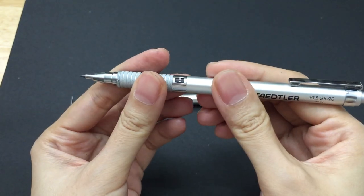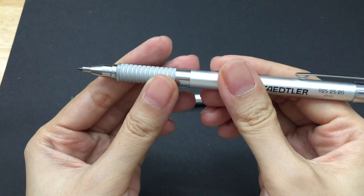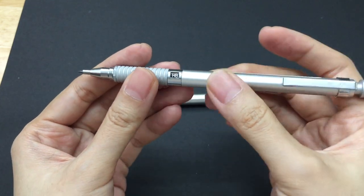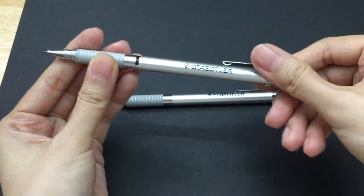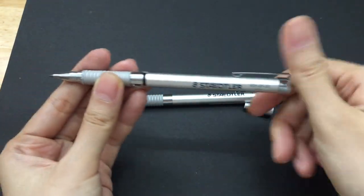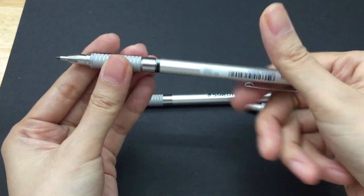Same if you want to adjust the lead hardness indicator, you need to unscrew it a bit. But then I unscrewed it all the way so I can show you clearly how the container looks like.